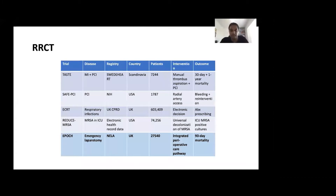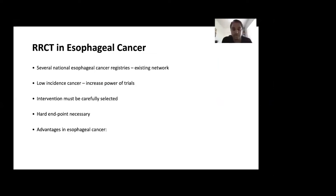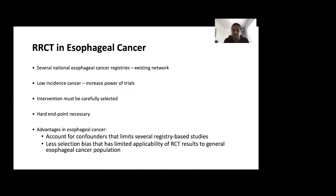These are some examples of registry-based randomized control trials, and I really want to highlight the vast numbers of patients going through these trials — they do confer a high degree of external validity. When we look specifically at esophageal cancer, why do we need registry-based RCTs? We have an existing network of several esophageal cancer registries nationally. We are dealing with a low-incidence cancer, so these types of trials will increase the power of our trials. The intervention must be carefully selected and a hard endpoint used. The key advantage is that it accounts for confounders that have limited registry-based studies and reduces the selection bias that has limited the applicability of RCTs to the general esophageal cancer patient population, as illustrated by the TIME trial.